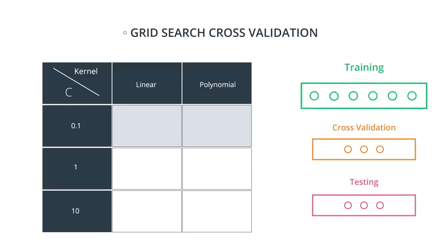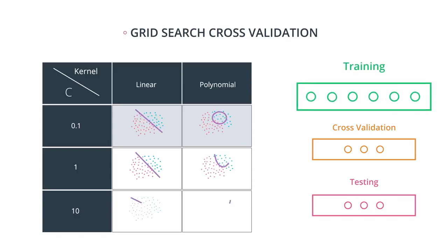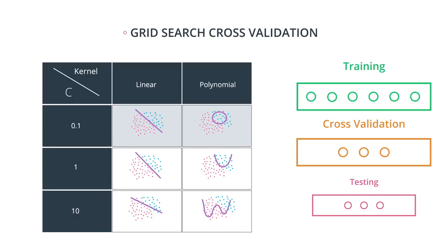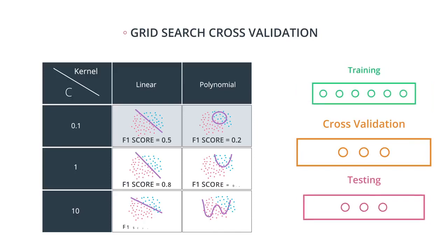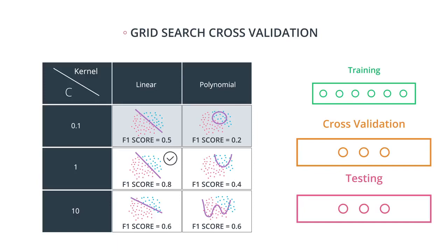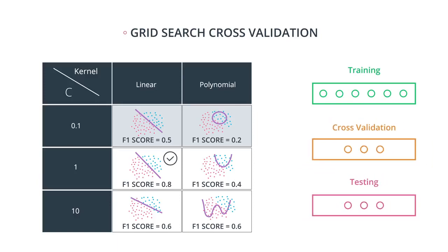So again, we use our training set to train a bunch of linear models and polynomial models with different values of gamma. Then we use the cross-validation set to calculate the F1 score on all these models. And then we simply pick the one with the highest F1 score. And finally, we use a testing set to make sure that what we did was good.